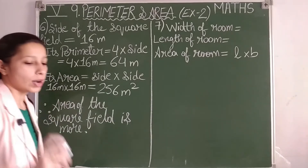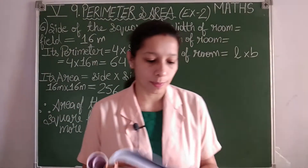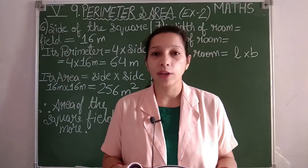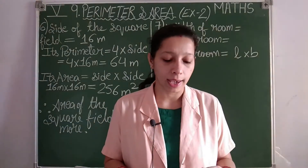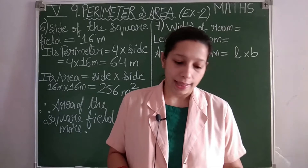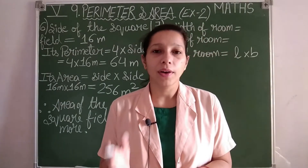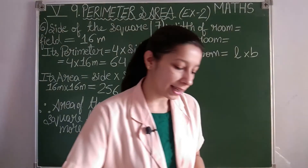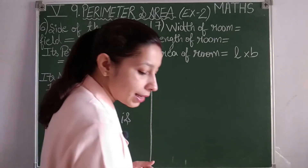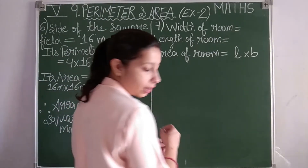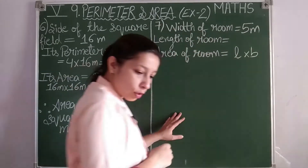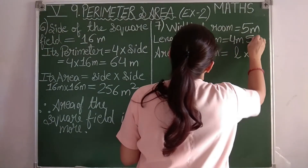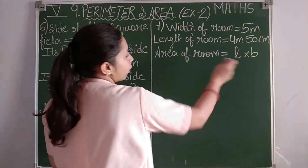Now question number seven: find the area of a room 5 meters wide and 4 meters 50 centimeters long. Width means breadth of the room is 5 meters, and the length is 4 meters 50 centimeters. We have to find the area, so area of the rectangular room equals length into breadth.